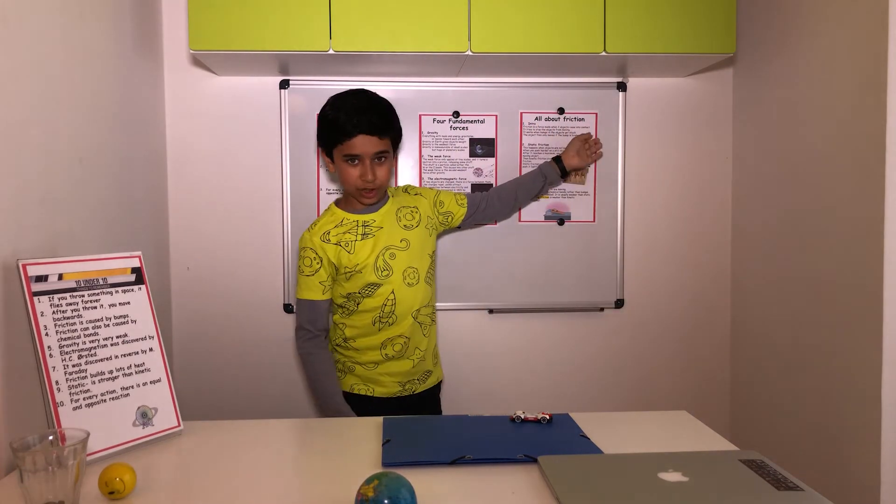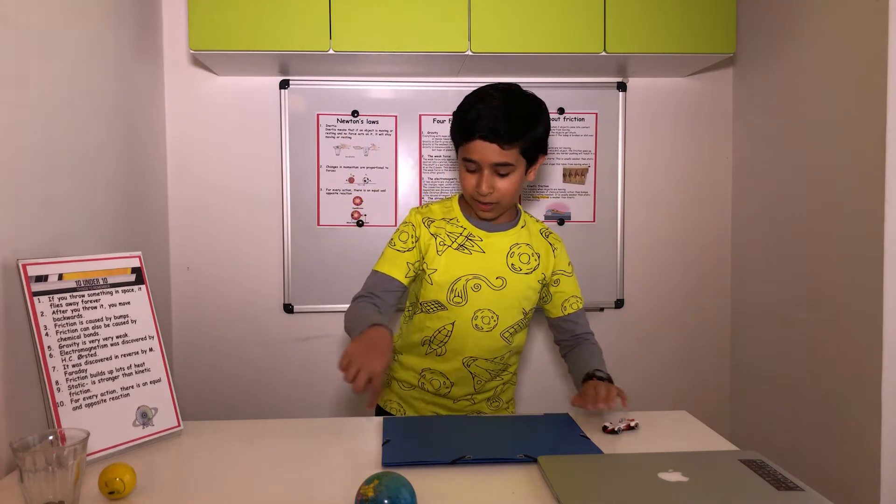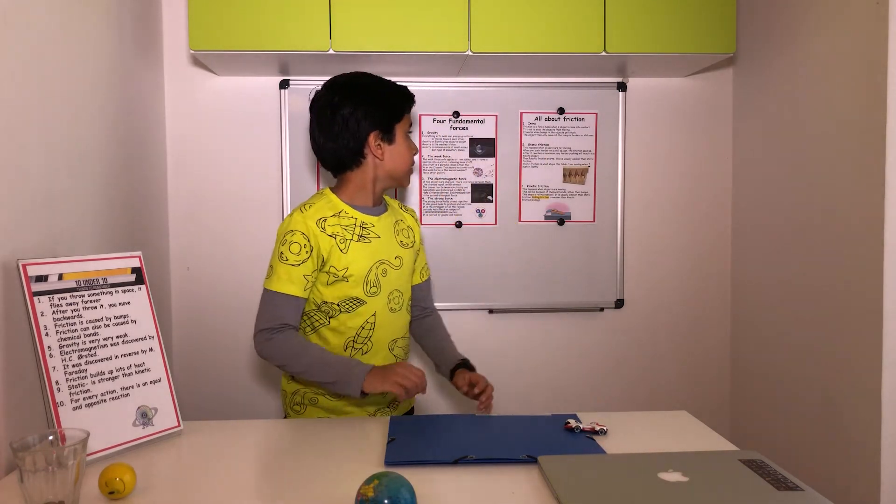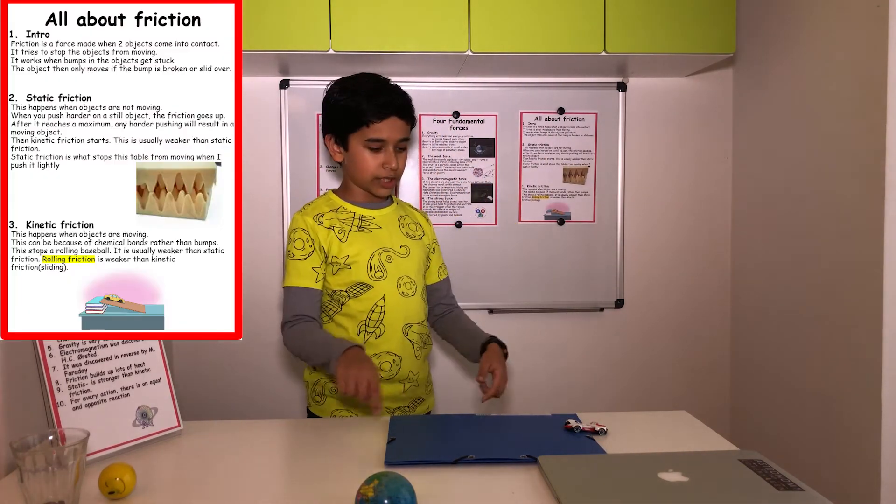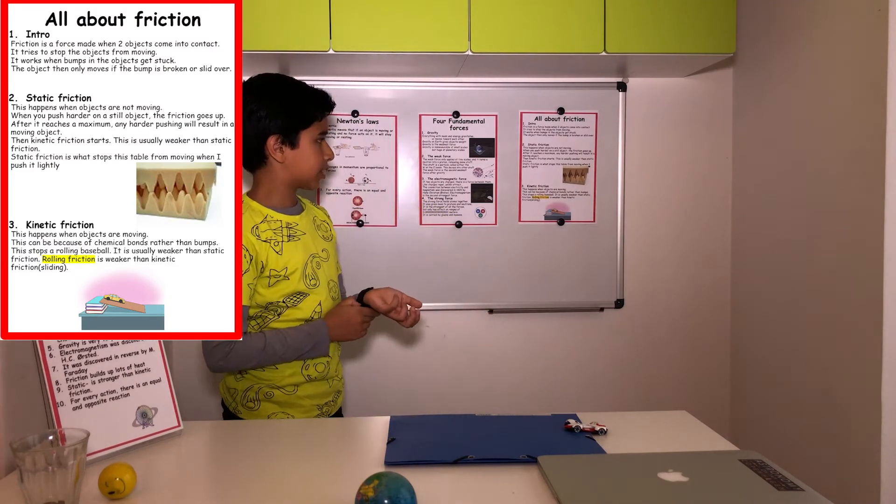All about friction. Intro. Friction is a force made when two objects come into contact. It works when bumps in the objects get stuck. The object only moves if the bump is broken or slid over.